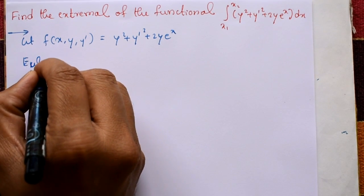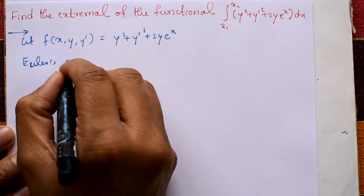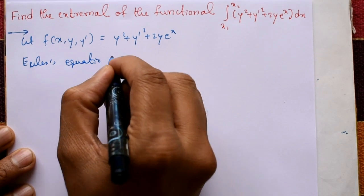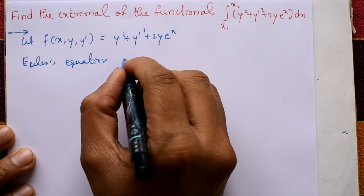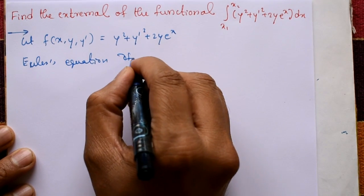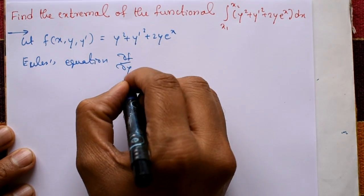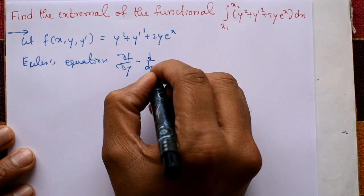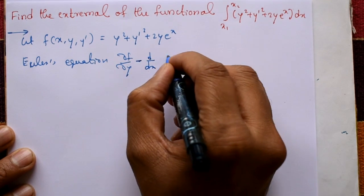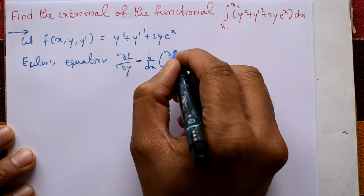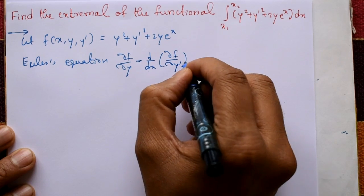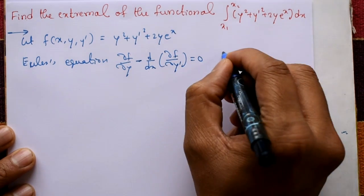Using Euler's equation: ∂f/∂y minus d/dx of (∂f/∂y') equals 0.